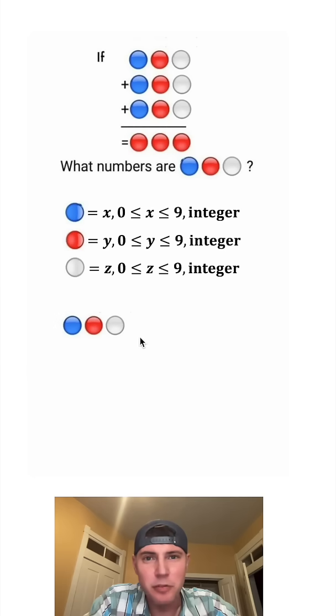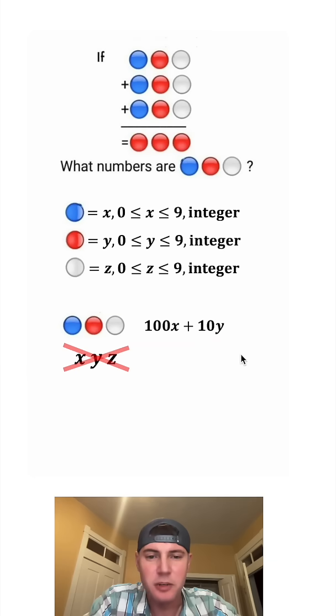If we want to plug this into Wolfram Alpha, we can't just put x, y, z, because Wolfram Alpha will automatically multiply these. So the correct way to do this, the x is in the hundreds place, so this will be 100x. The y is in the tens place, so this will be plus 10y. And then the z is in the ones place, so it'll be plus z.